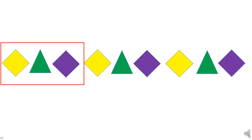I hope children you have understood the concept of patterns. You can make patterns using different objects — for example, spoon and plate, or spoon and fork. You can even make patterns with your building blocks, or with fruits and vegetables as I have shown. Make different patterns using different objects, and I am sure you will have lots of fun.